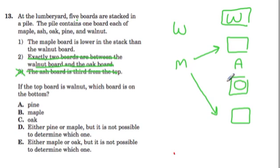We don't know where. So that means that the pine could also go here or here. So our answer is D, either pine or maple, but it is not possible to determine which one.